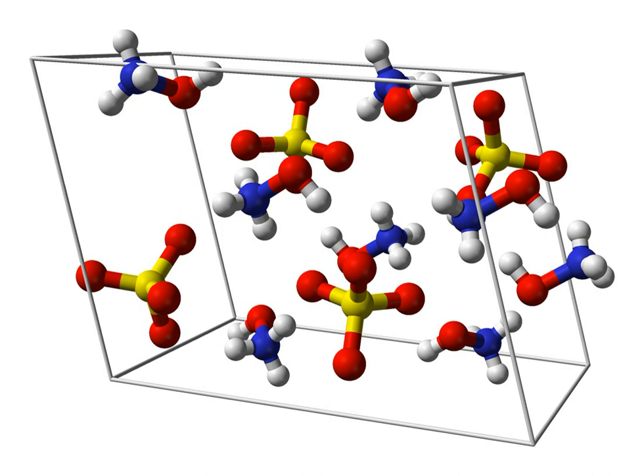2NH3OH2SO4 yields 2SO3 plus N2O plus 2OH2 plus NH3 plus 5OH. This reaction is exothermic above 138 degrees Celsius and is most exothermic at 177 degrees Celsius.